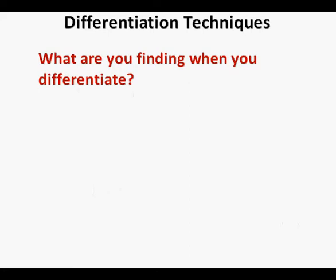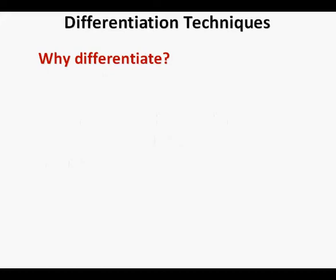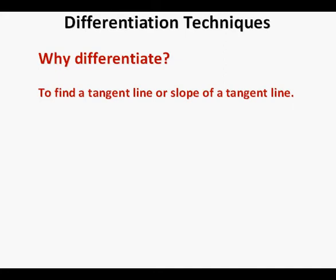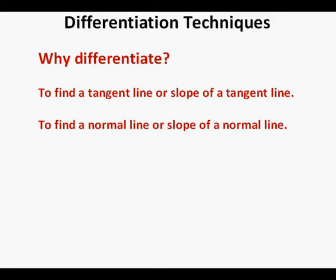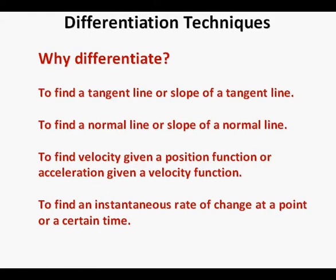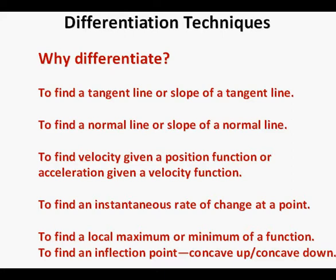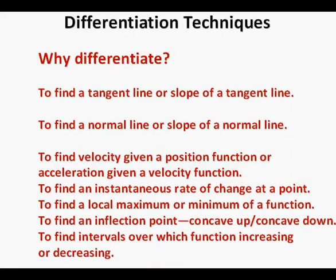Now a conceptual question: what are you finding when you differentiate? You are finding the equation or function for the slope of the original function given input values for that function. We'll go into the context of why we would need to differentiate: to find the tangent line or slope of a line tangent to a function at a point, or to find a normal line to a function at a point — a normal line is perpendicular to a tangent line. To find velocity given a position function or acceleration given a velocity function, or to find an instantaneous rate of change at a point.